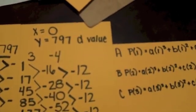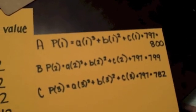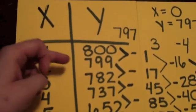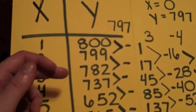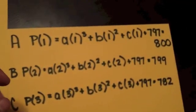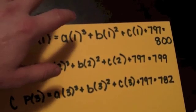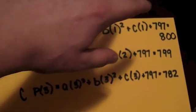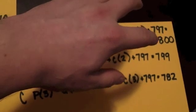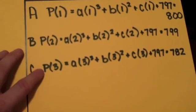What we are going to do now is set up three different equations — we are going to call them A, B, and C — and we are going to use what we already know: when x equals 1, y equals 800; when x equals 2, y equals 799; and when x equals 3, y equals 782. We are going to set up P(1) equals A times 1 cubed plus B times 1 squared plus C times 1 plus 797, which equals 800. And we are going to do the same thing for when x equals 2 and x equals 3. Those are going to be our equations A, B, and C.